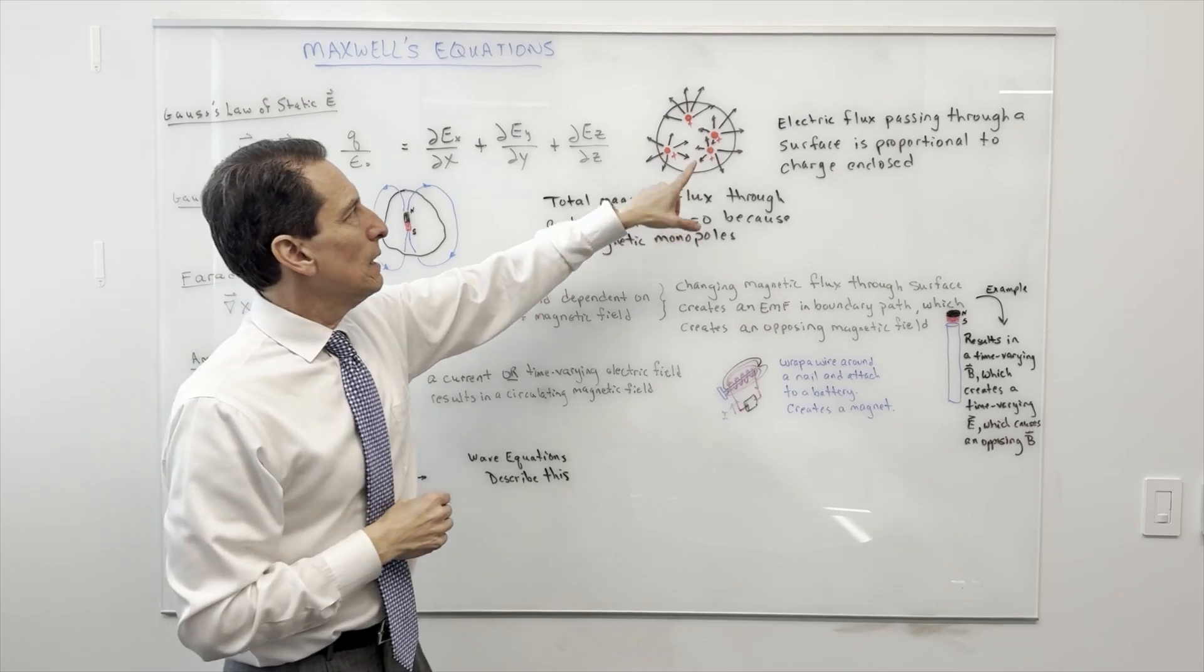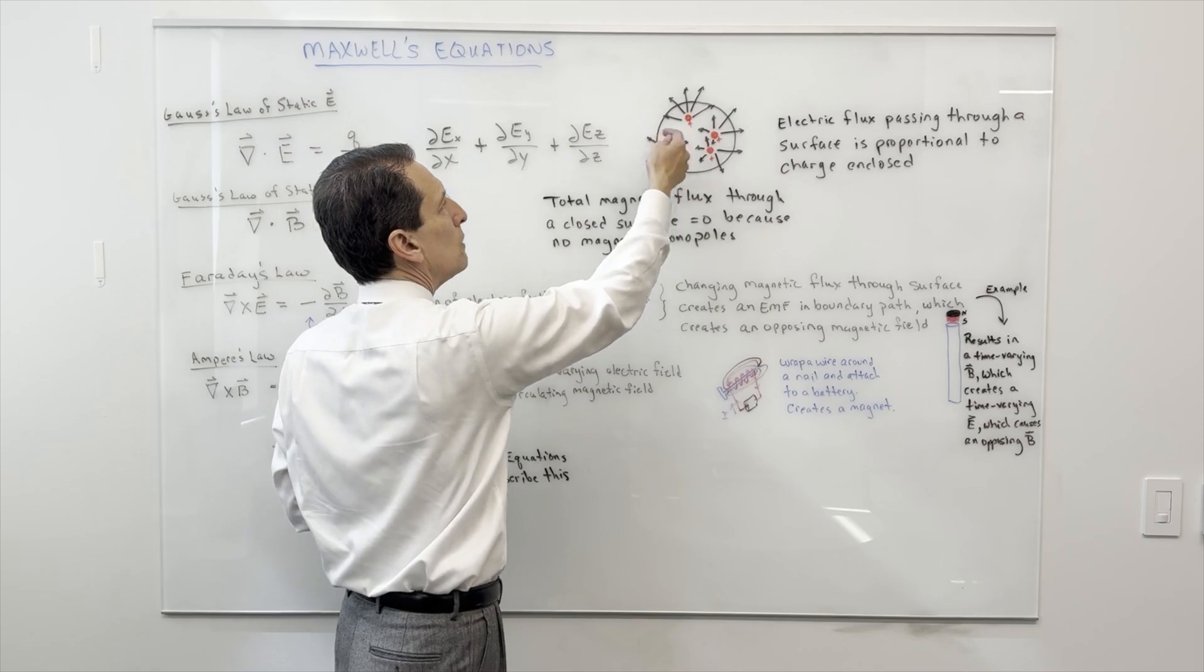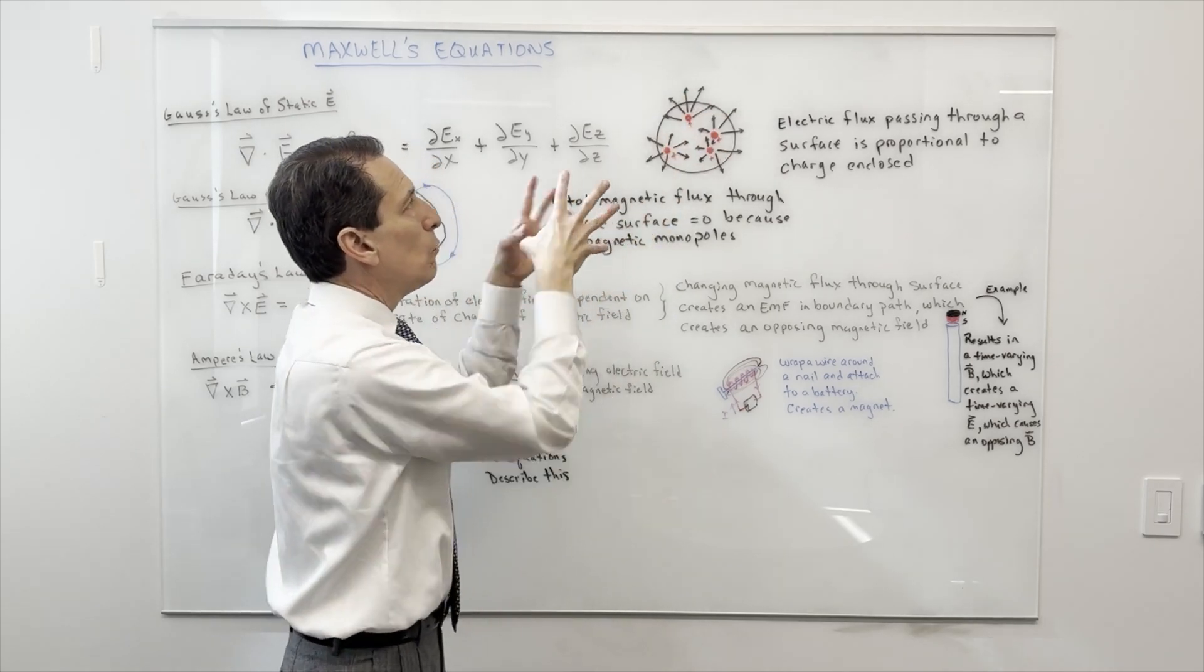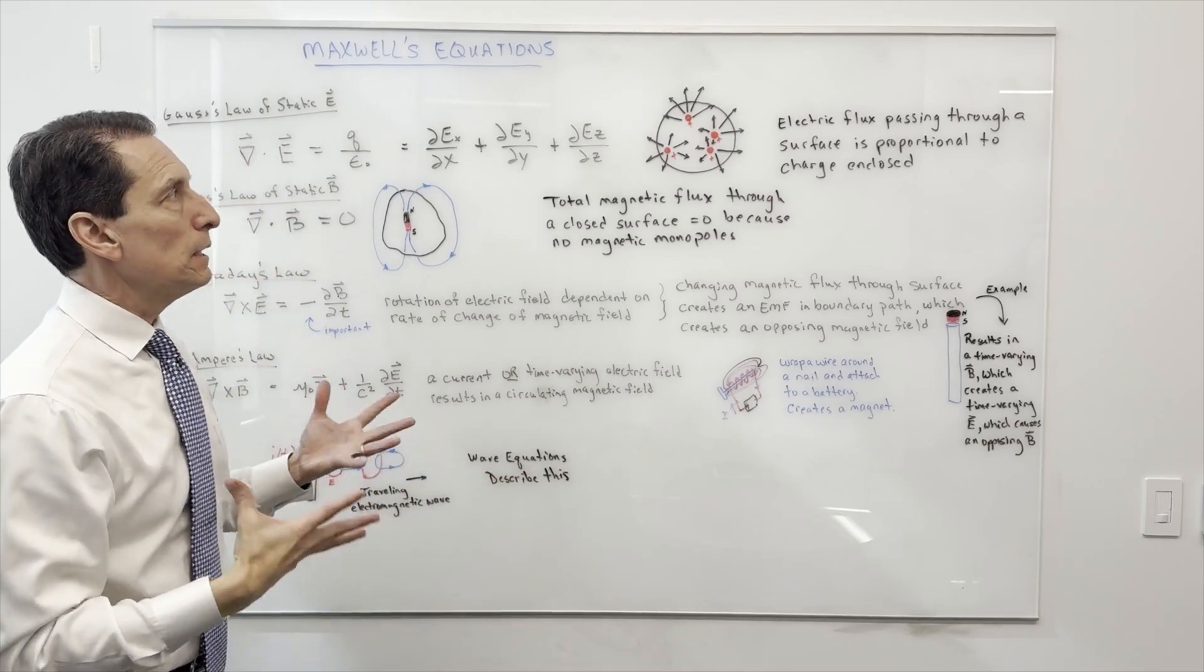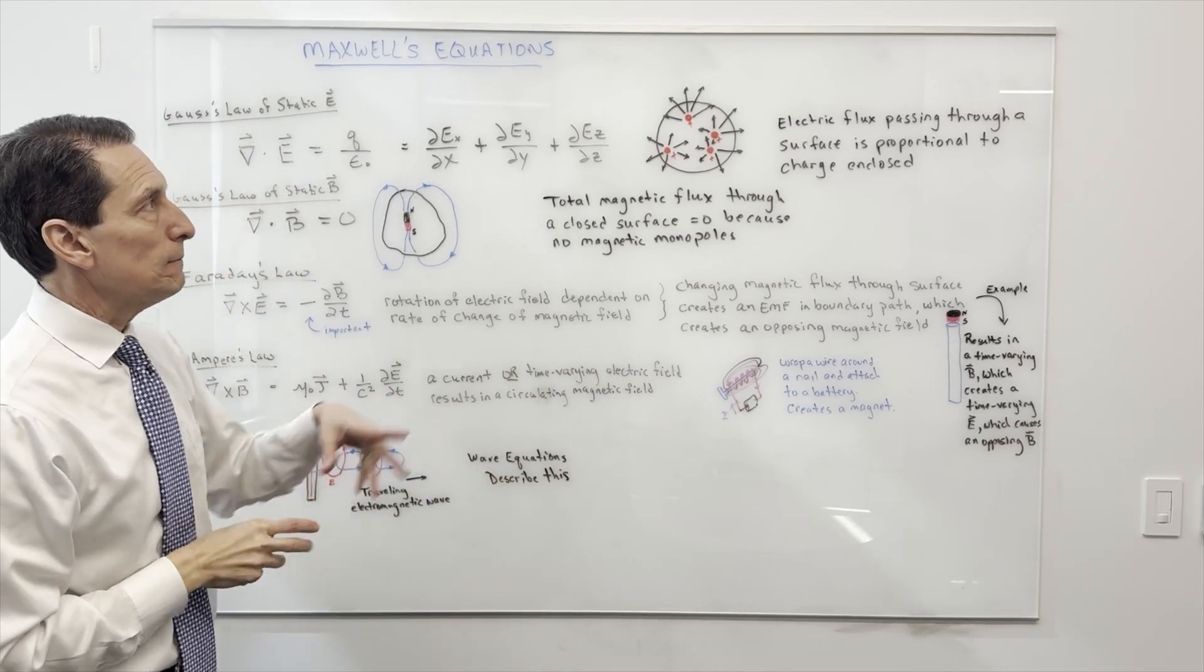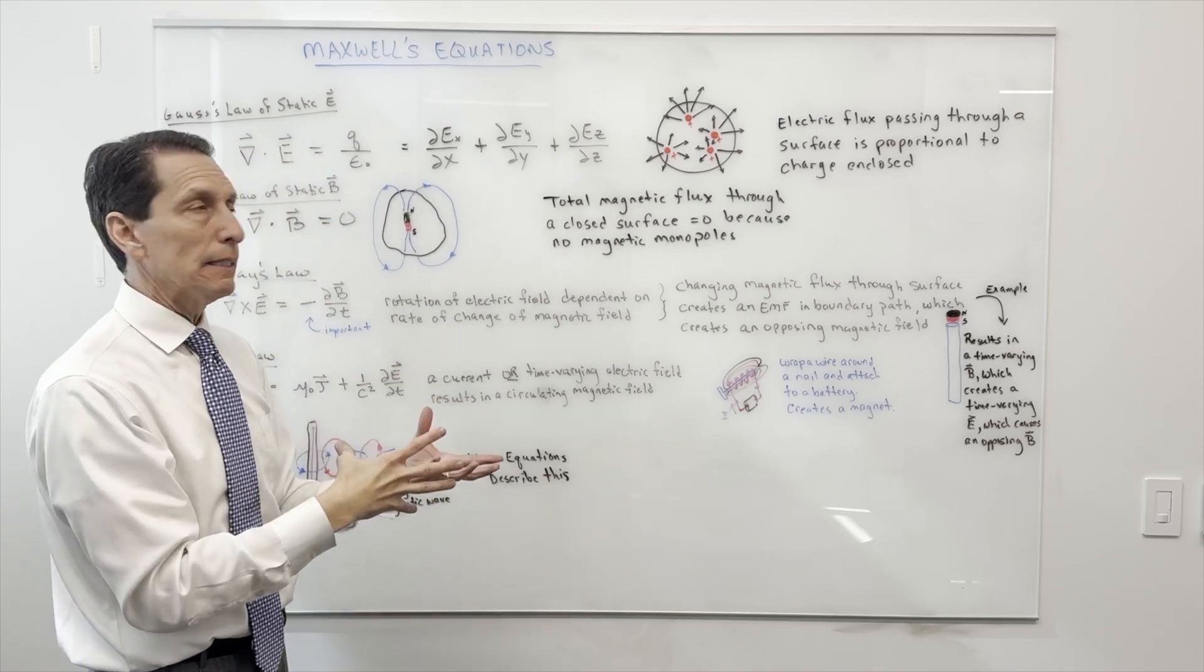What does that mean in real life? If you have some volume or some space with a bunch of charge and electric charge, they're all going to generate these electric field lines, and the more charge you put in there, the more electric fields you're going to have coming out. In words, the electric flux passing through a surface is proportional to the charge inside.